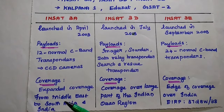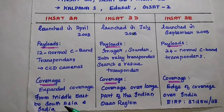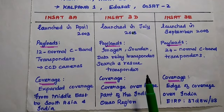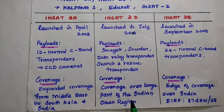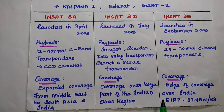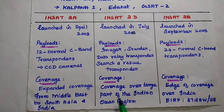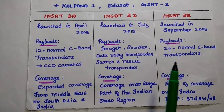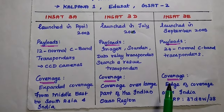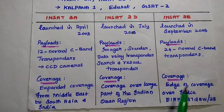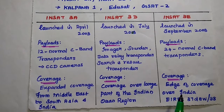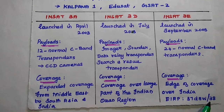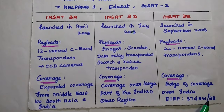The INSAT-3C coverage area is expanded from the Middle East to South Asia and India. INSAT-3D coverage is over part of the Indian Ocean region, covering a large part of it. INSAT-3E coverage is mainly focused on the edge of coverage over India with EIRP of 37 dBW and 38 dBW.